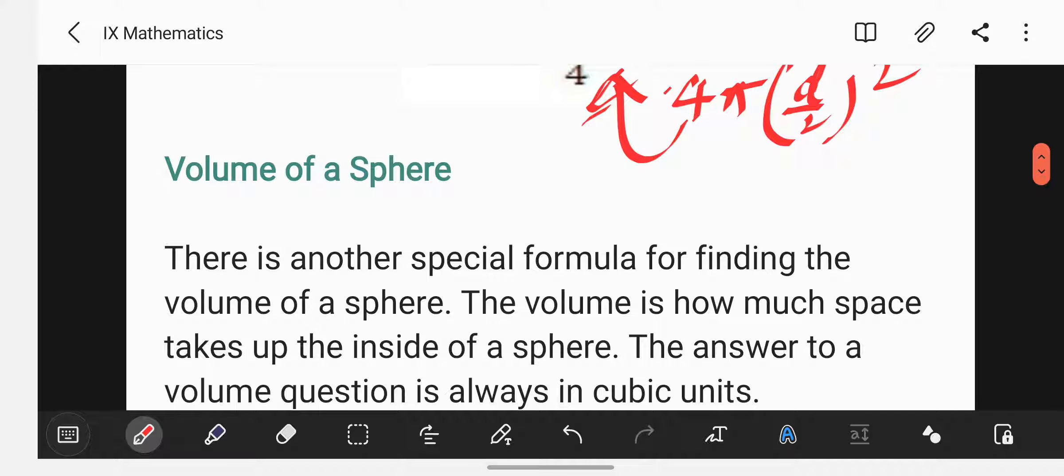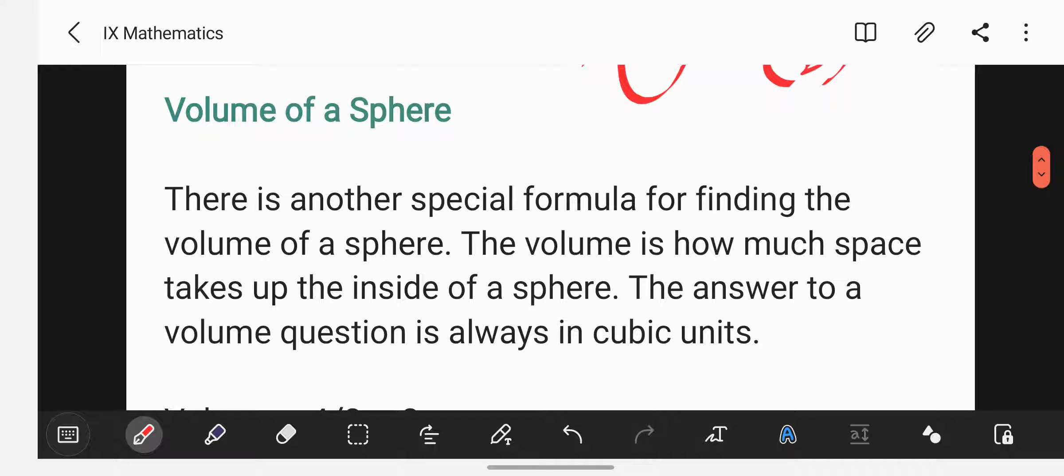Next is the volume of a sphere. There's another special formula for finding the volume of a sphere. The volume is how much space takes up the inside of a sphere. Like volume is the space occupied by any object, which you have learned in your science also. So space occupied by any object or the capacity of that object, how much it can hold.